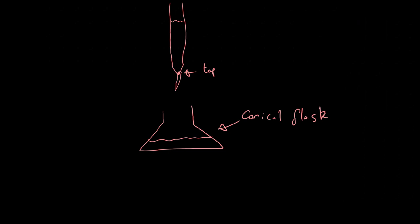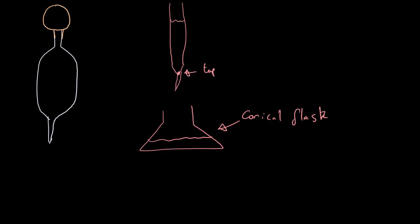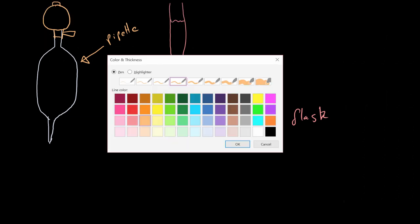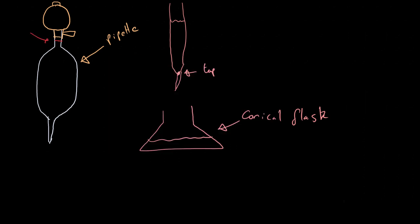The way we measure 25 cm³ is using a pipette. The small pipettes aren't really good enough, so we use a larger one which has a filter on the top. They're quite large because they contain 25 cm³. The filter uses suction to fill up the pipette, and a marking on the pipette shows exactly 25 cm³.